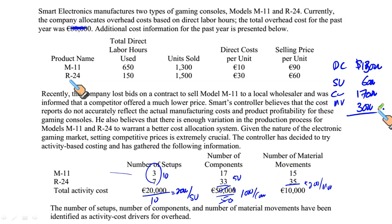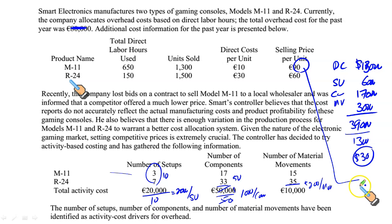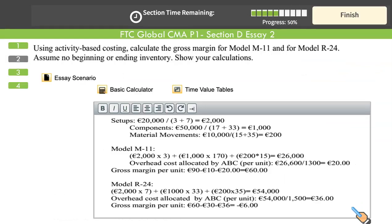Adding all M11 costs: 13,000 + 6,000 + 17,000 + 3,000 = total cost of 39,000 under the ABC model. Dividing 39,000 by 1,300 units gives a unit cost of 30 euros. With a selling price of 90 euros, 90 minus 30 gives a gross profit of 60 euros under ABC. The gross margin under ABC for M11 is 60 euros.